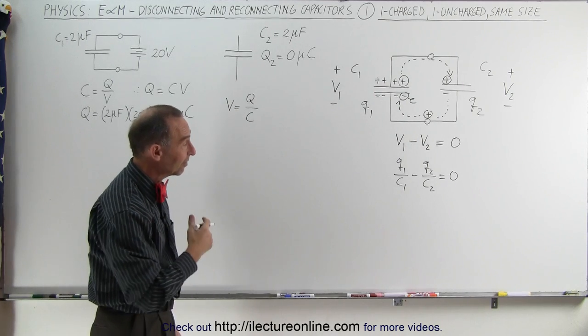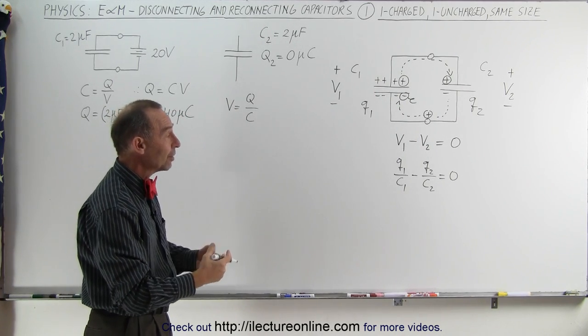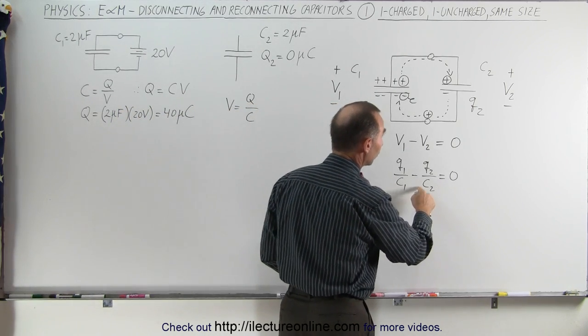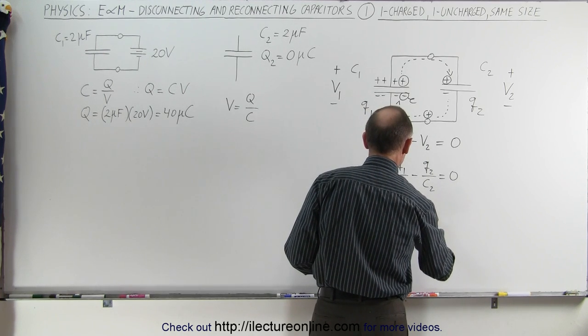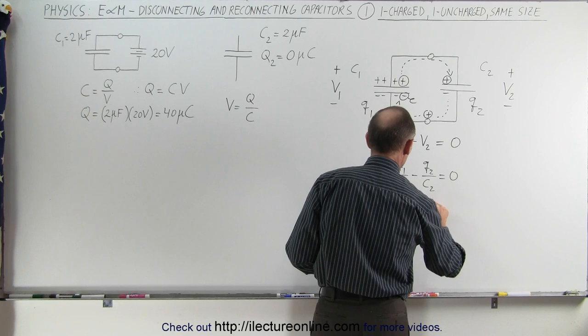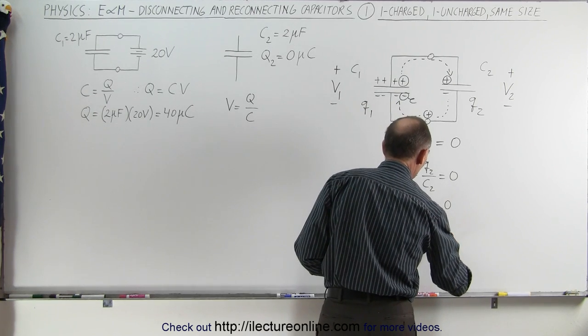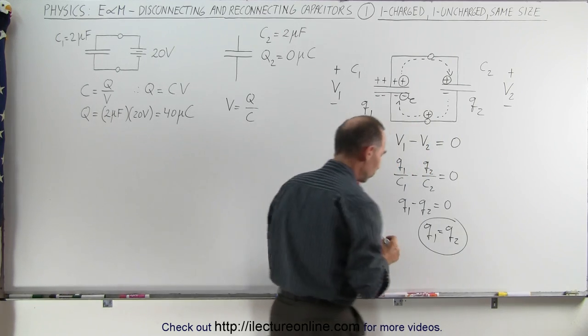Now in this case, we let C1 equal to C2. So that means if they're equal in value, we can multiply both sides of the equation by the value of C1 and C2, which is 2 microcoulombs. And so when we do that, we can go ahead and say that Q1 minus Q2 is equal to zero, and that means that Q1 is equal to Q2. So they must be equal to one another.